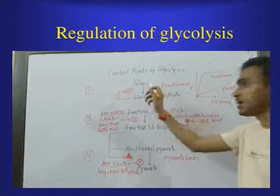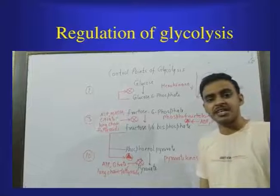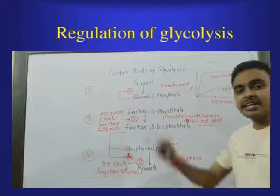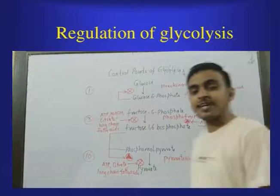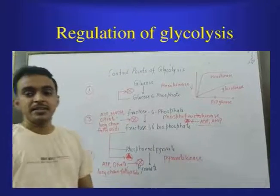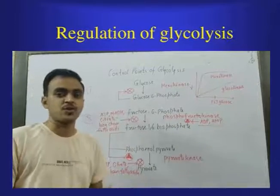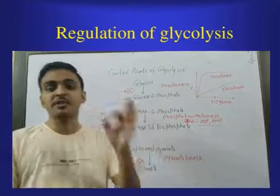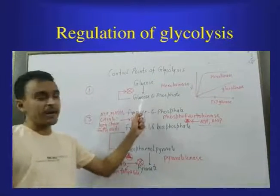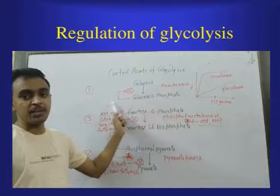In the first step, glucose is converted into glucose 6-phosphate by phosphorylation, and the key enzyme is hexokinase. Its alternative form, glucokinase, is present only in liver cells. Hexokinase is not very specific for glucose — it reacts with most hexose sugars — but glucokinase is more specific for glucose only. This enzyme is inhibited by its product, glucose 6-phosphate, by a product inhibition mechanism.